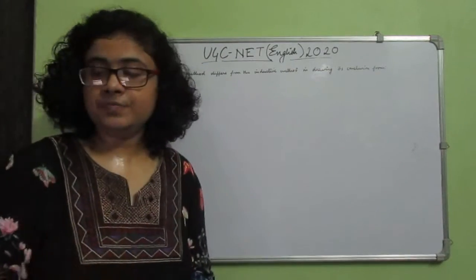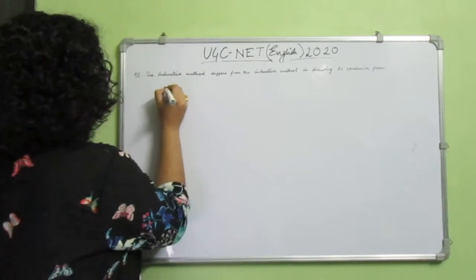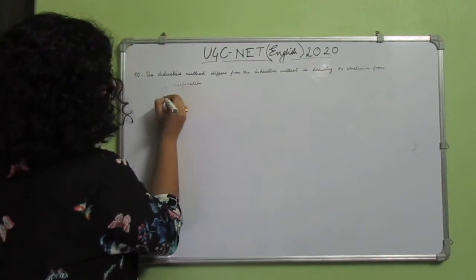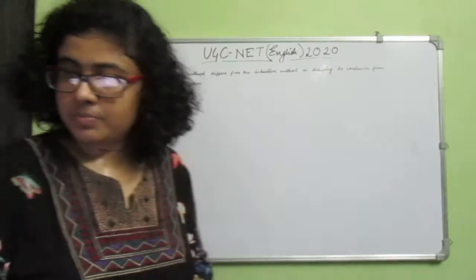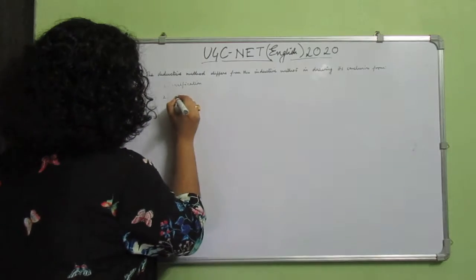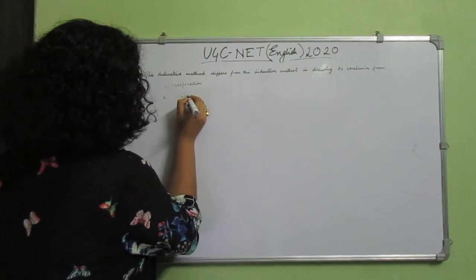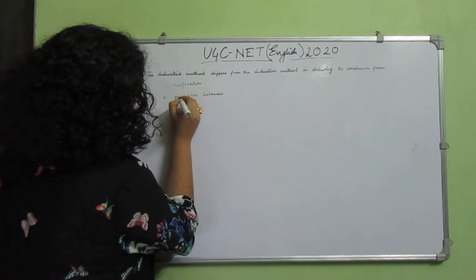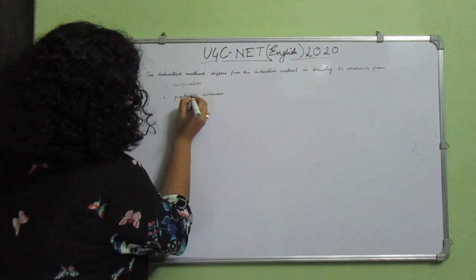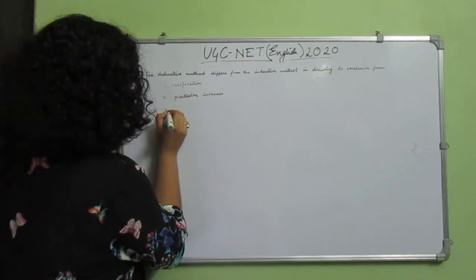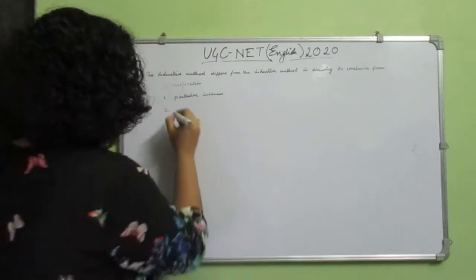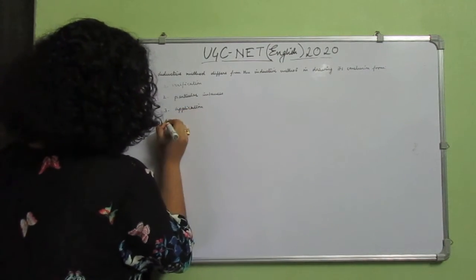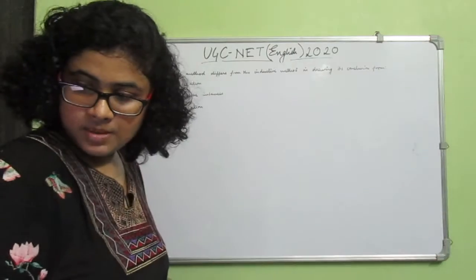Question number 90: The deductive method differs from the inductive method in drawing its conclusion. The options are: 1. Verification, 2. Particular instances, 3. Applications, 4. General truths.